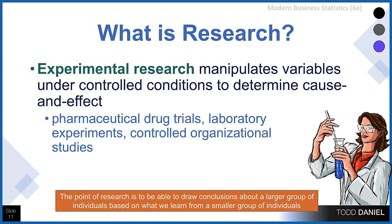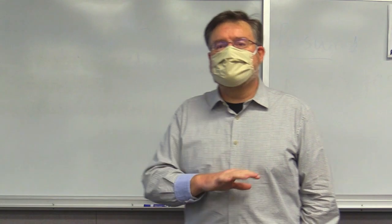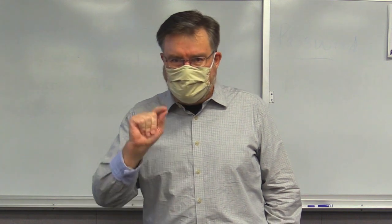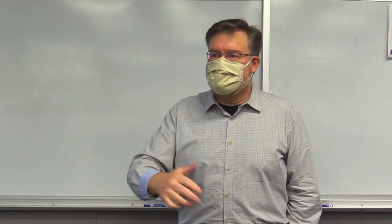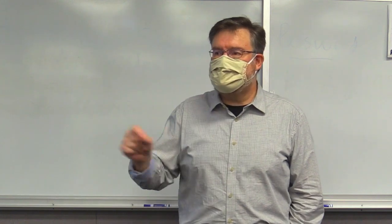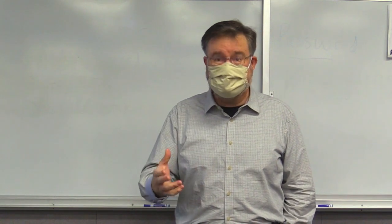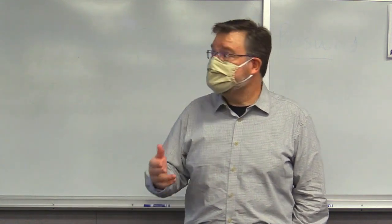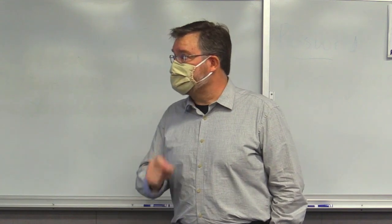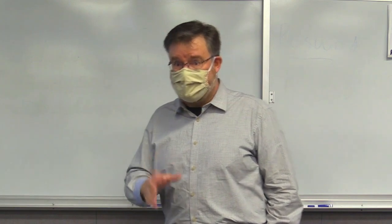The third form of research — maybe the one people think of most readily — is experimental research. What characterizes experimental research is that it manipulates variables under controlled conditions to determine cause and effect. If we have two groups that are exactly the same except for one difference, and we see that the group that got the drug performed much better — blood pressure decreased, performance increased — we're able to establish that cause-and-effect relationship, which goes a long way in science to telling us something valuable about how the world works.